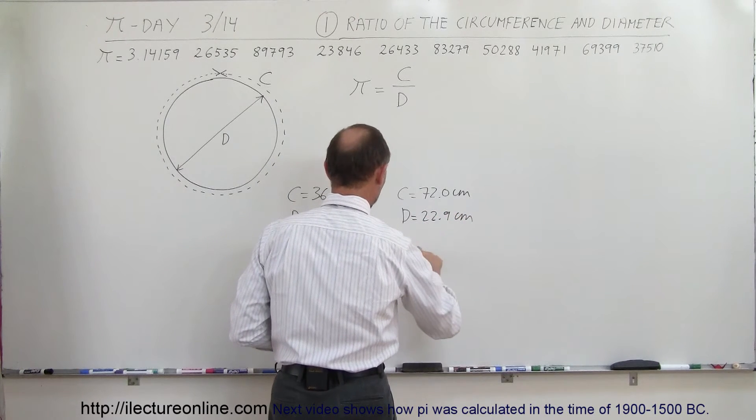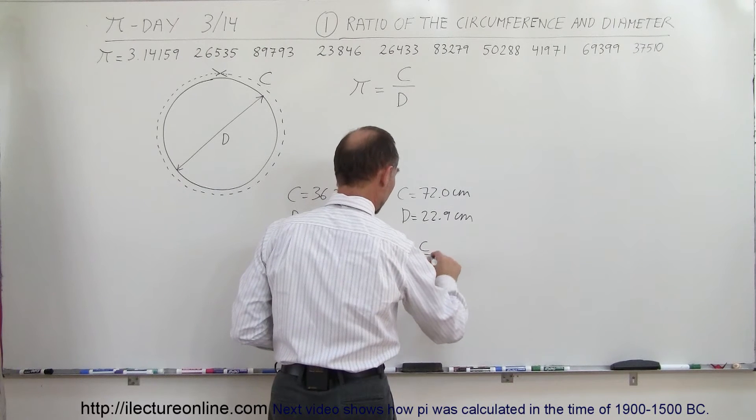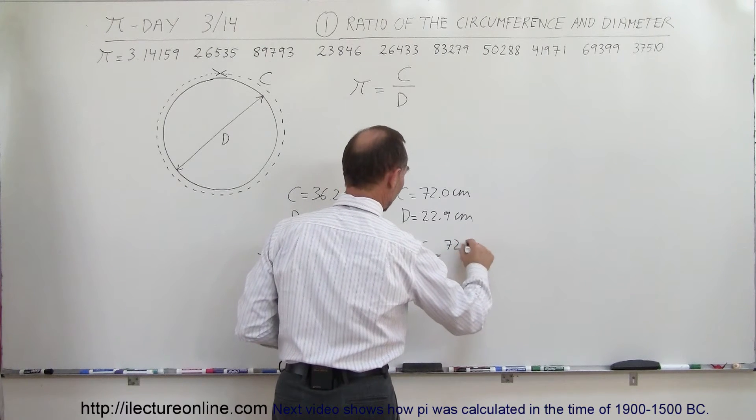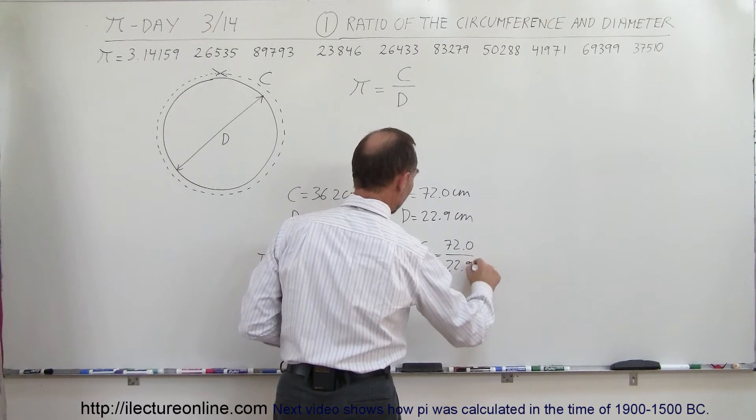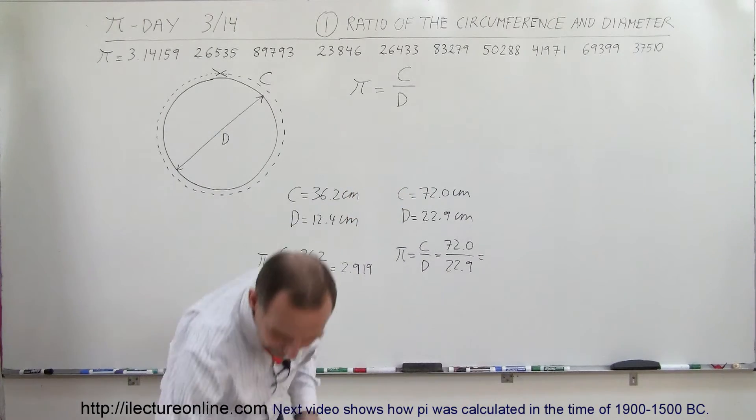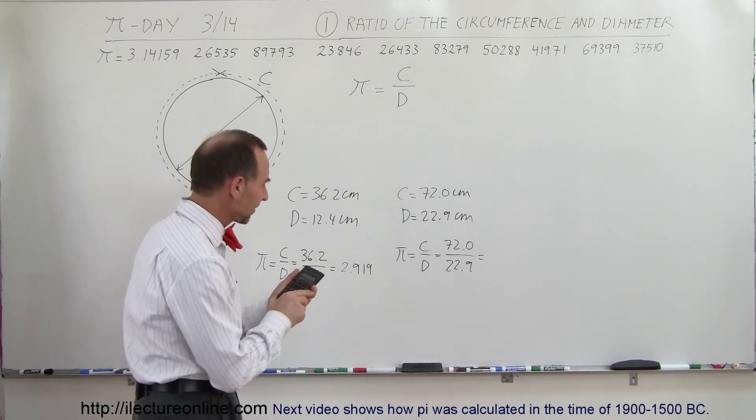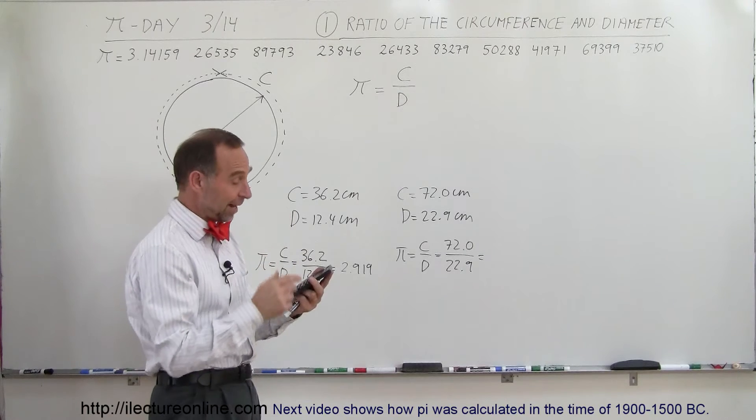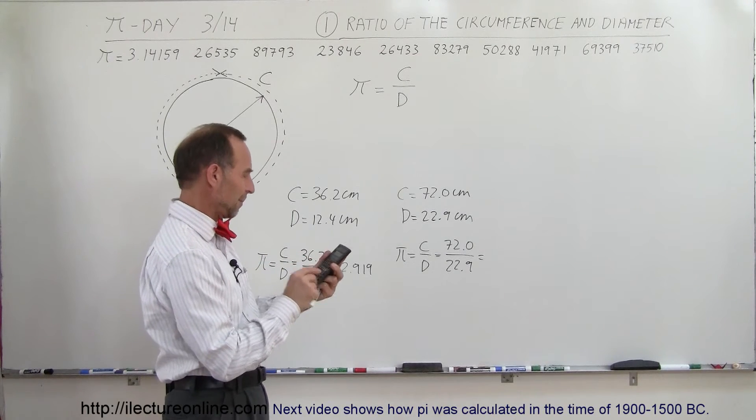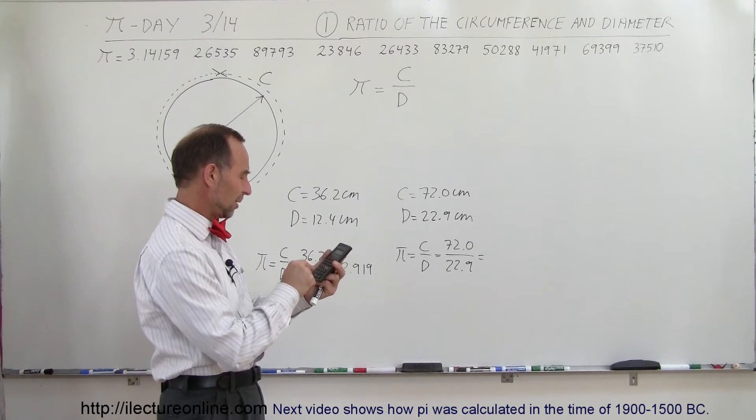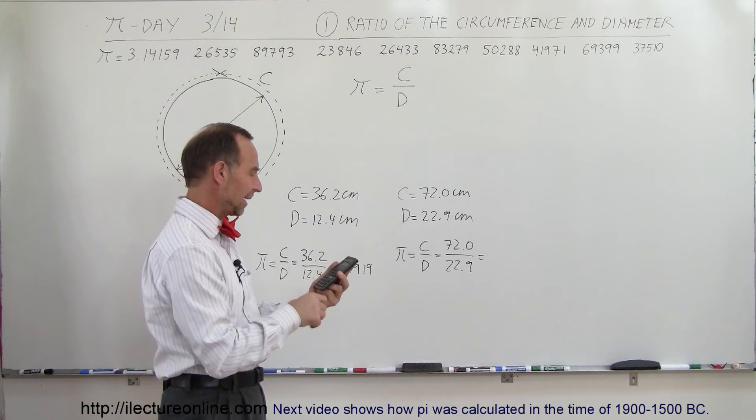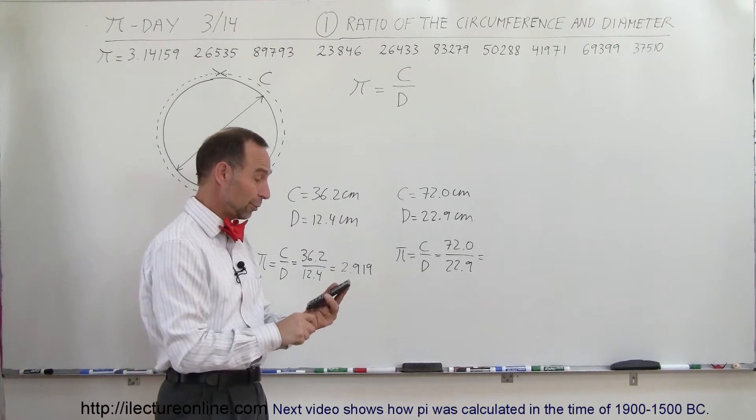Pi would be equal to the circumference divided by diameter, 72.0 divided by 22.9. Let's see what we get this time. I expect something a little bit better. It was tricky to measure the pie pan. 72 divided by 22.9, and I get 3.1441. Wow.